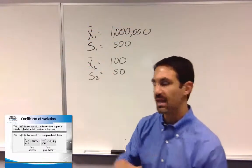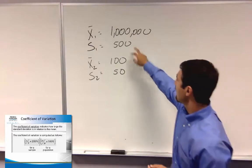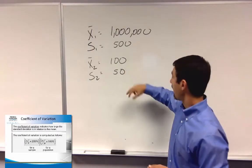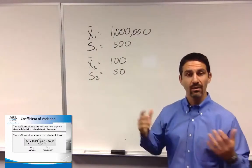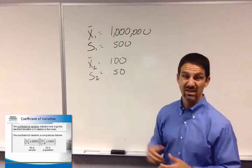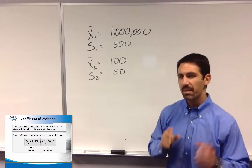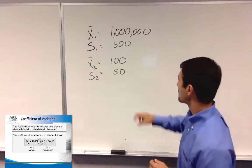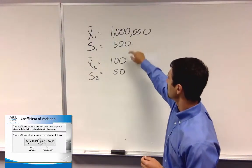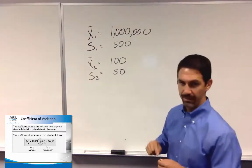So let's take a look at an example up here on the whiteboard. Let's say I have a standard deviation of 500 and one of 50. Well, the one that's 500, since it's larger, must mean there's more variation. But if you really look at it, think about the variation in terms of the sample mean.